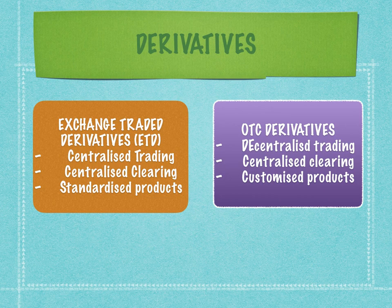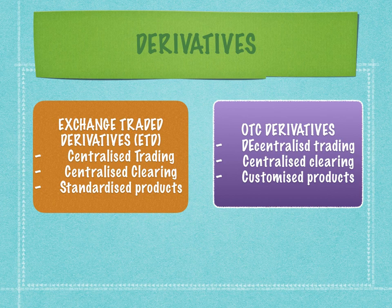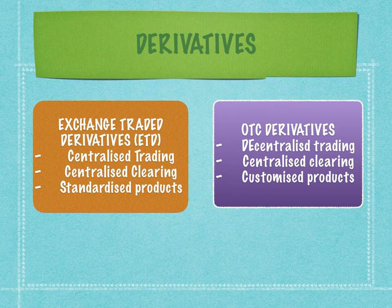Why is there a need for an OTC market? Because the products in the OTC market are very structured and customized to meet the requirements of the counterparties — not standardized at all. Exchanges have inadequacies, especially since their products are only suited to certain segments of people. OTC derivatives cater to a completely different segment of the market.